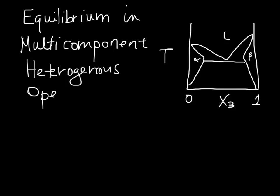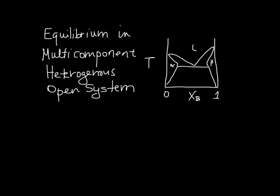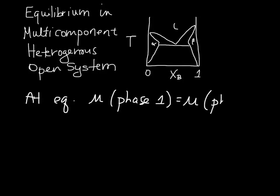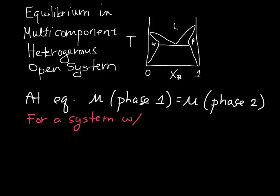The system must be open, I guess, because we have to allow for the exchange of matter. This is what we are interested in. At equilibrium, the chemical potential of any species in phase one will be equal to the chemical potential in phase two. We can be a little bit more specific and rigorous and say that for a system that has P possible phases and C total components,